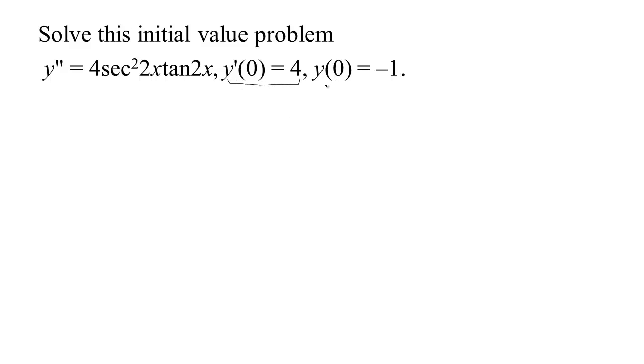We know y prime is 4 and we know that the position is negative 1, so this is initial data. And so we call this an initial value problem. Figure out what is y. There would be a whole family of functions that have this as their second derivative. We want to find the particular member of the family. We want to pick what the arbitrary constants are by using our initial data.